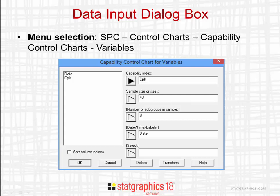If the capability indices are based upon individuals' data, you can leave that field blank. In the field labeled Date, Time, and Labels, put the name of a column containing indications of when each value of the capability index was collected.